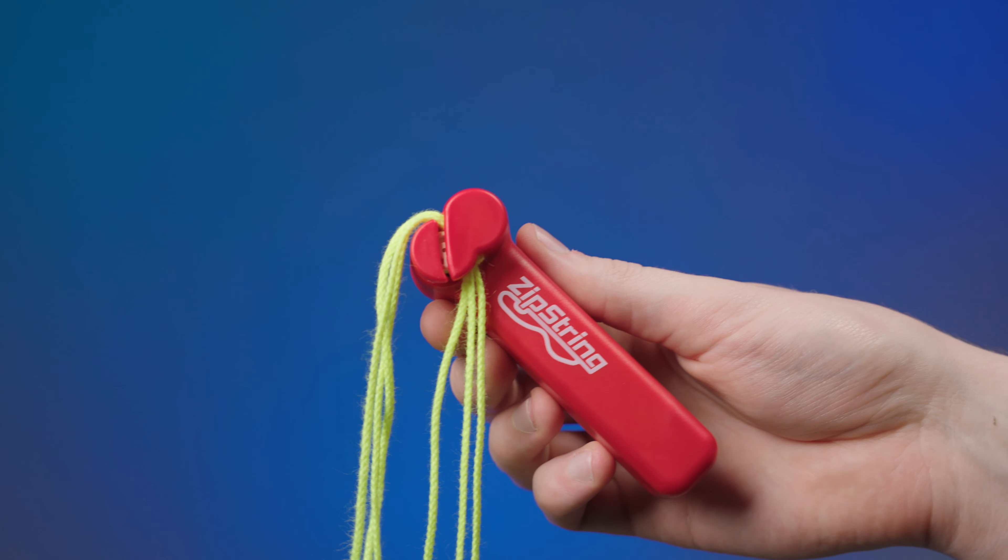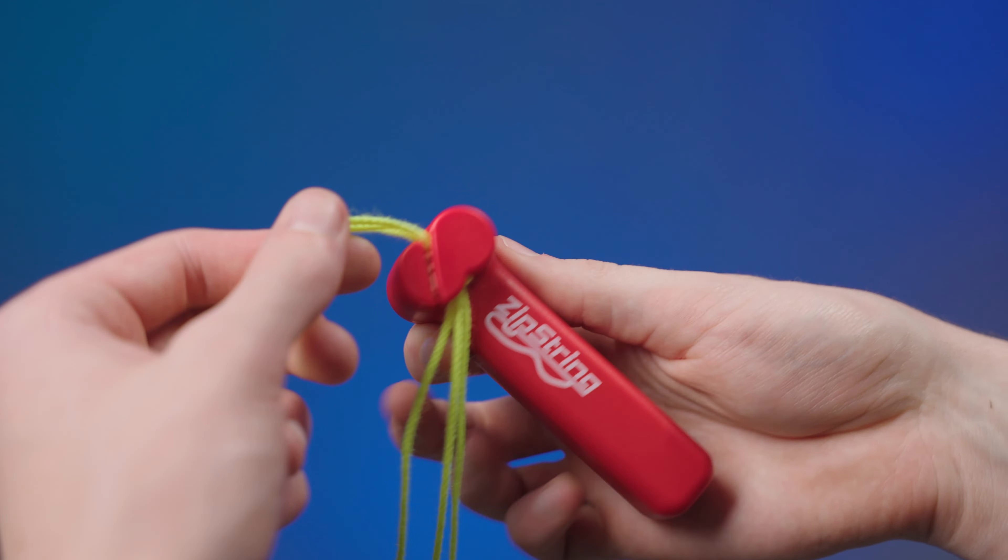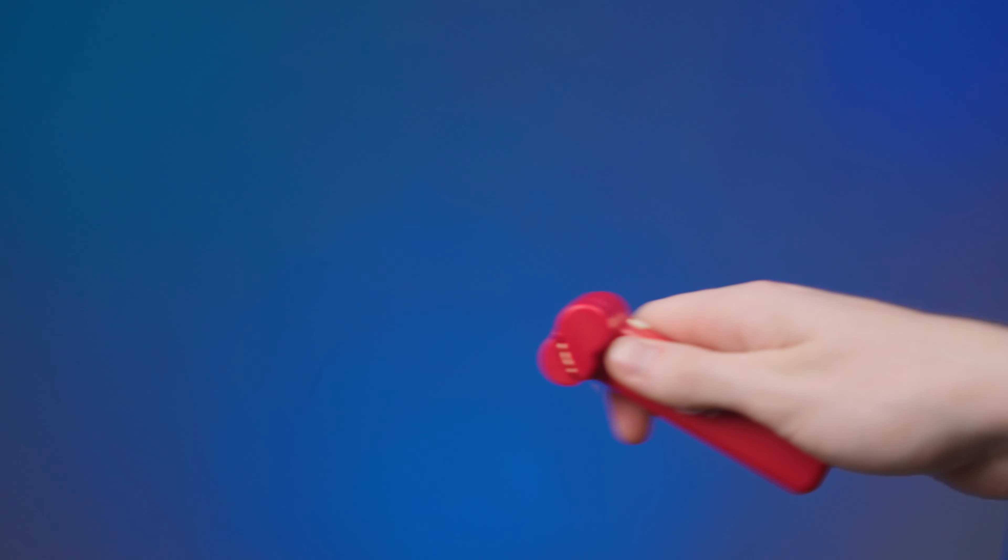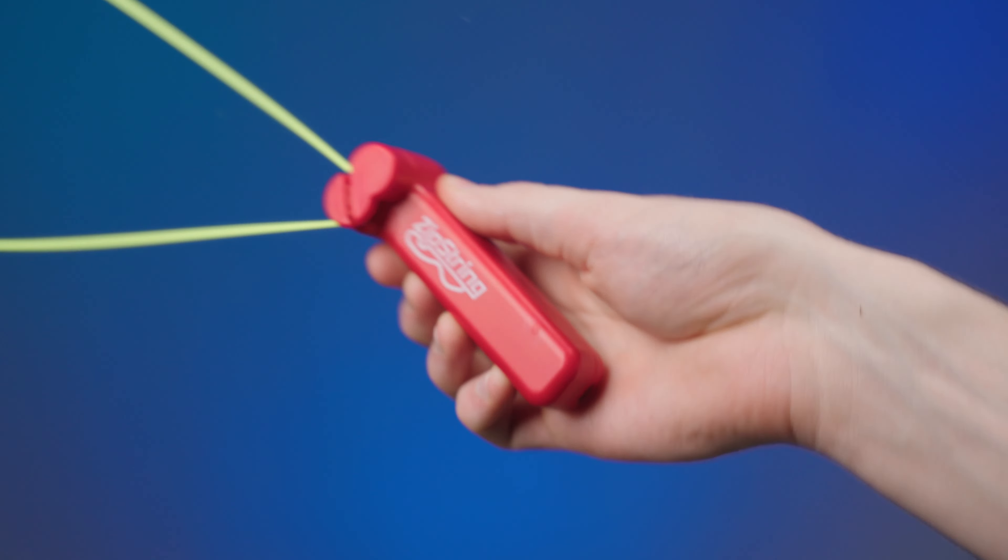When you have a tangle like this, all you do is grab the string coming out and pull it through the floss gap. Remove the tangles, insert the string back in, and you're good to go.